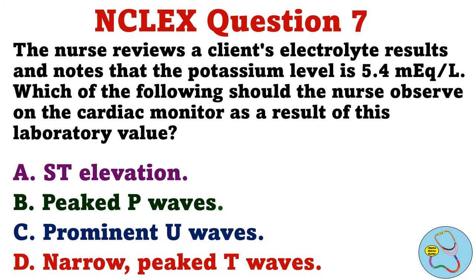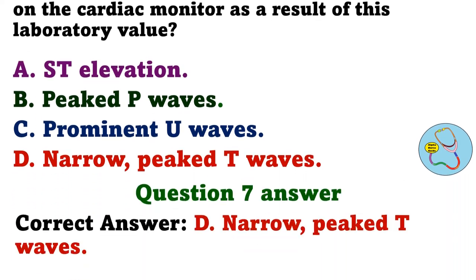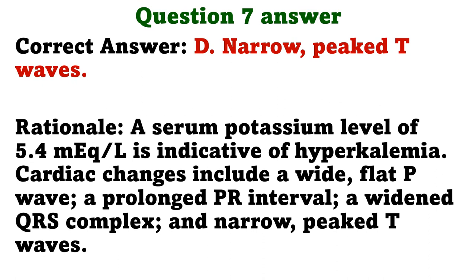Question 7. The nurse reviews a client's electrolyte results and notes that the potassium level is 5.4 mEq/L. Which of the following should the nurse observe on the cardiac monitor as a result of this laboratory value? A. ST elevation. B. Peaked P waves. C. Prominent U waves. D. Narrow, peaked T waves. The correct answer is D. Narrow, peaked T waves. Rationale. A serum potassium level of 5.4 mEq/L is indicative of hyperkalemia. Cardiac changes include a wide, flat P wave, a prolonged PR interval, a widened QRS complex, and narrow, peaked T waves.